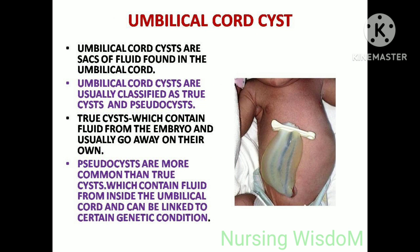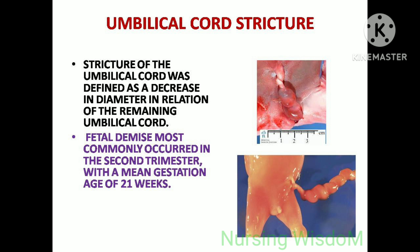Umbilical cord cyst: these are sacs of fluid found in the umbilical cord, classified as true cysts and pseudocysts. True cysts contain fluid from the embryo and usually go away on their own. Pseudocysts are more common than true cysts, contain fluid from inside the umbilical cord, and can be linked to certain genetic conditions. Umbilical cord stricture is defined as a decrease in diameter in relation to the remaining umbilical cord; fetal demise most commonly occurs in the second trimester with a mean gestational age of 21 weeks.